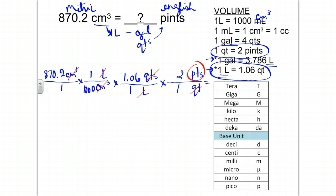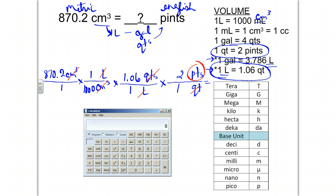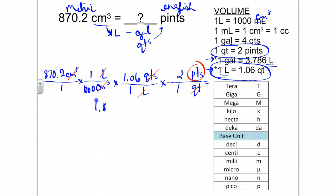So now we want to calculate our final answer. We're going to take 870.2 divided by 1,000 times 1.06 times 2 equals 1.845 pints. And that would be my final answer.